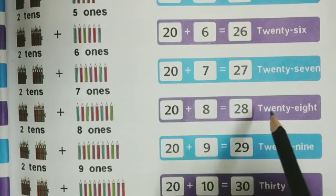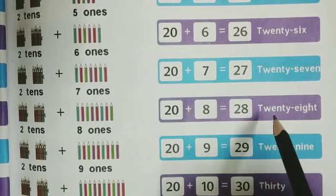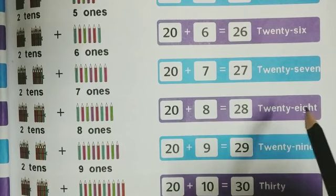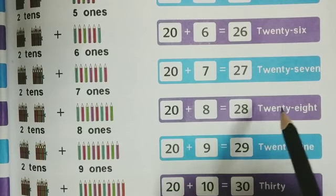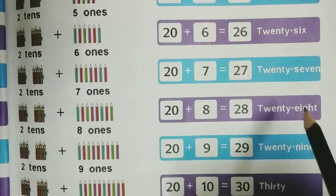The spelling of 28 is T-W-E-N-T-Y (20) E-I-G-H-T (8): twenty-eight. 28.